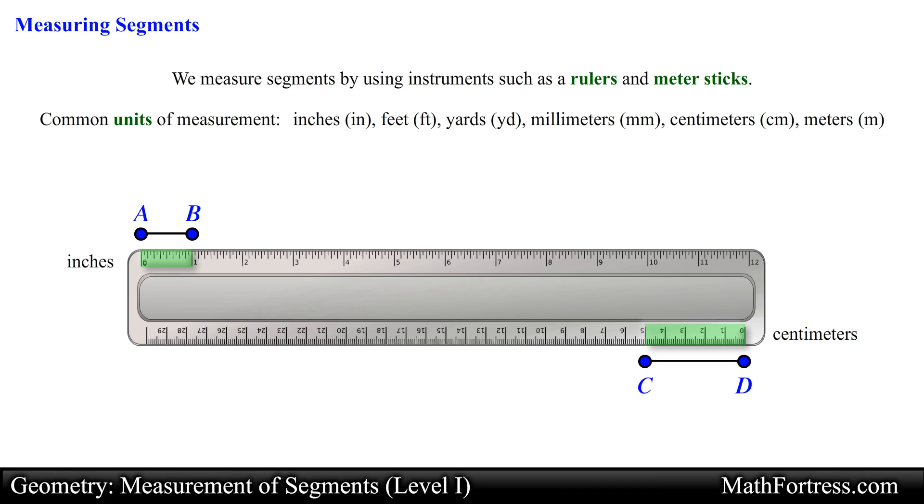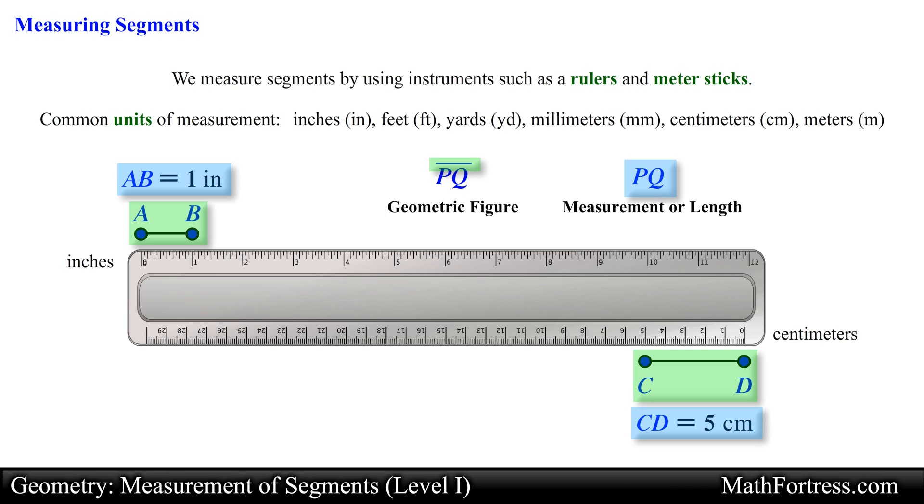In geometry, the way we denote the measurement of a segment is by writing the end points of the segment. For example, the measurement of segment AB is 1 inch and the measurement of segment CD is 5 centimeters. Notice the distinction between denoting a line segment, a geometric figure, and denoting the measurement or length of the line segment, which represents a numerical value. If you want to identify the line segment, we draw a horizontal segment, also known as a bar, on top of the letters. If we want to denote the measurement or length of the line segment, then we only denote the end points and do not draw a horizontal segment or bar on top of the letters.